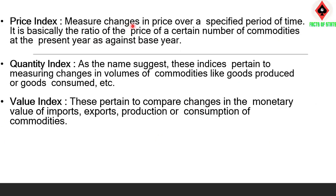Price index number measures the change in price over a specified period of time — the price of specific commodities. Quantity index number: As the name suggests, these indices measure the changes in volume of commodities like goods produced or goods consumed. Value index: These compare the change in monetary value of imports, exports, production or consumption of commodities.